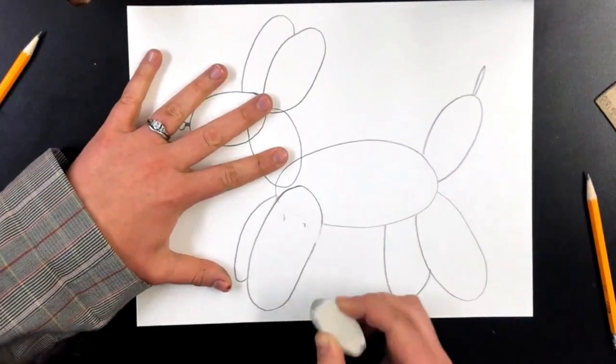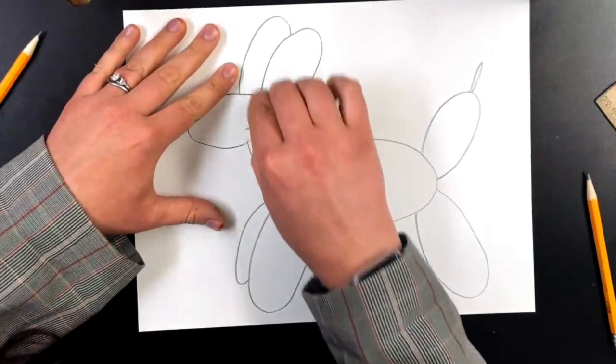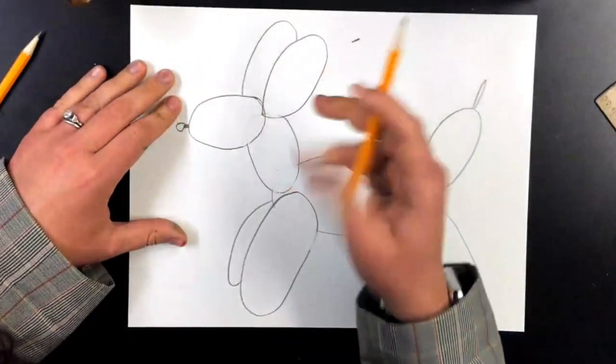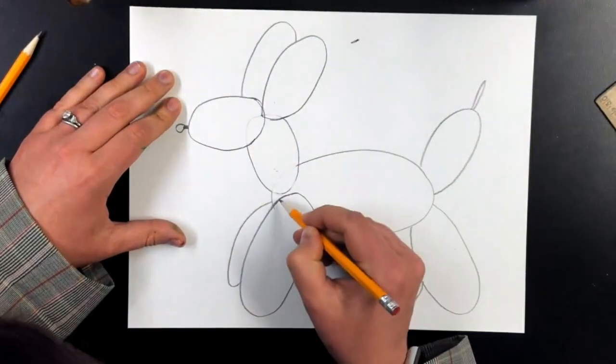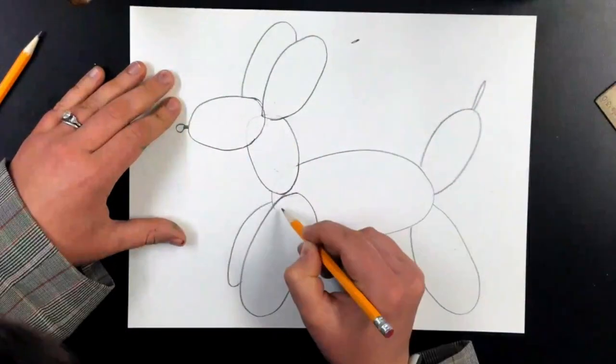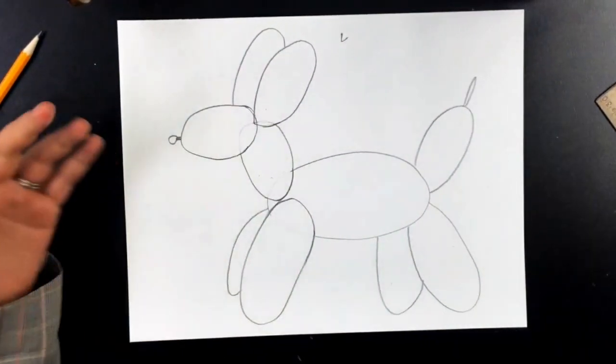So you're gonna go in and erase a couple lines that we overlap. You don't have to do this but I do think it makes it look more realistic to our balloon dog. I'm going back in and rewriting those lines that I accidentally erased.